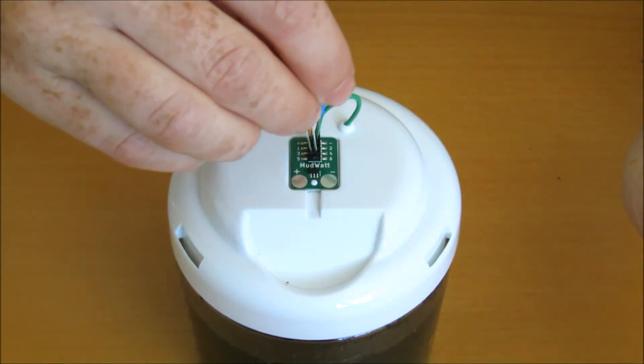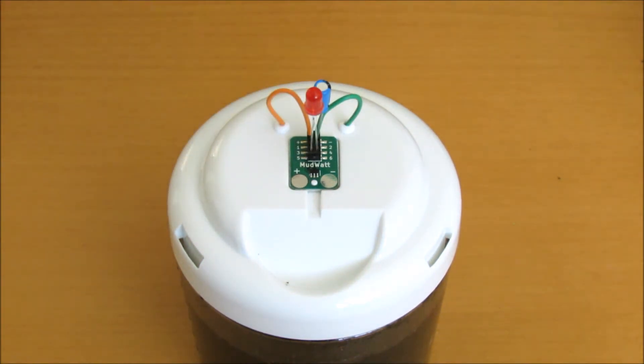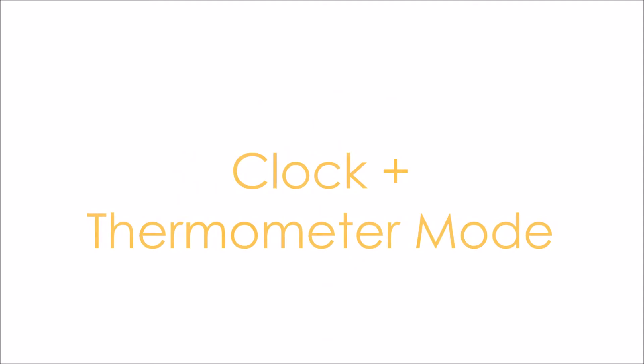Once your MudWatt is generating consistent power in blinker mode, which typically takes 3 to 6 days, you can switch over to clock thermometer mode.